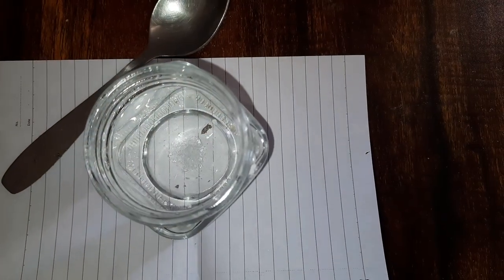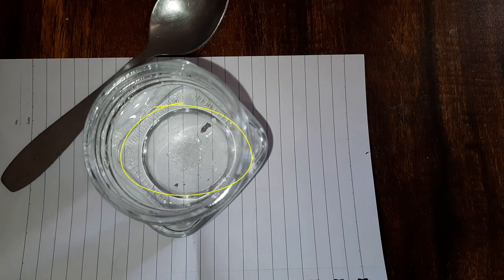So what we see is after adding the powdered alum the second time, not all of the alum has been dissolved. Some of it is settled at the base of this glass jar.